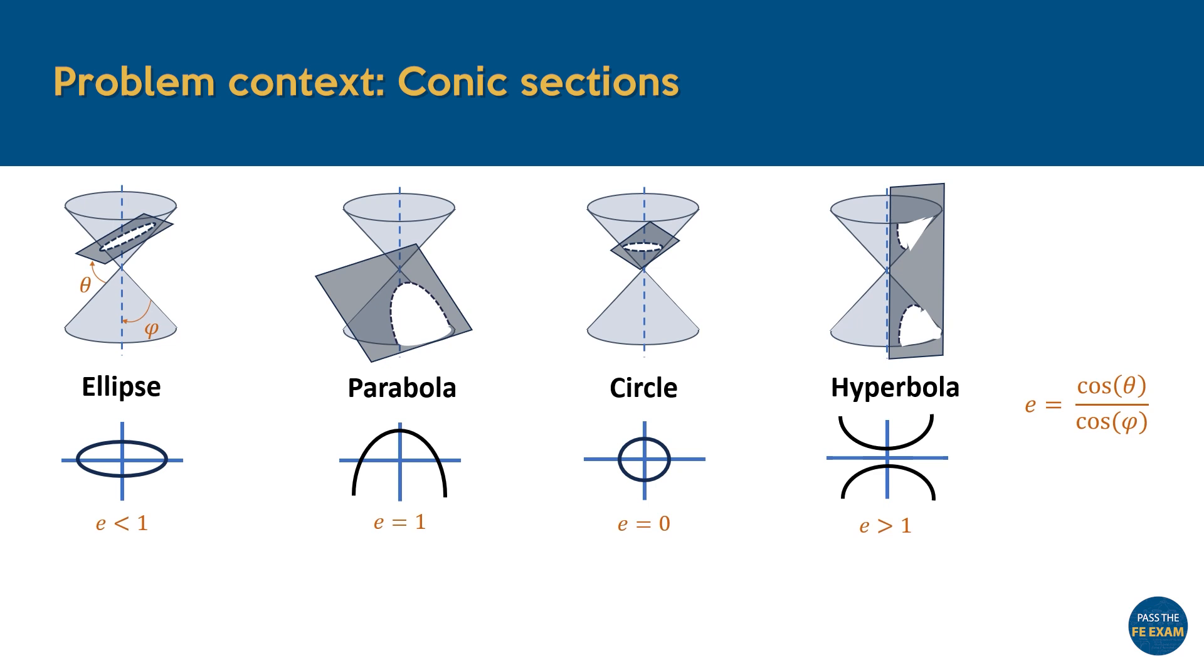For example, an ellipse has an eccentricity of less than one, while a parabola has an eccentricity equal to one. Beyond this classification scheme,